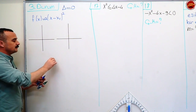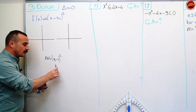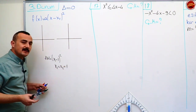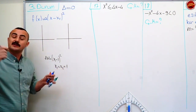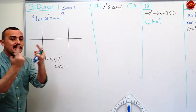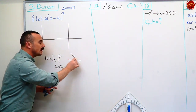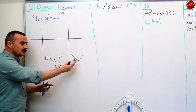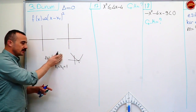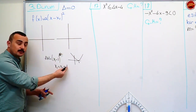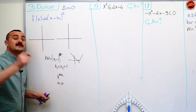Fx fonksiyonu a çarpı x eksi x₁'in karesi — delta'nın sıfıra eşit olduğu durum. İkinci dereceden denklemlerin deltasının sıfıra eşit olduğu durum: tam kare olduğu durum. Mesela x eksi birin karesi: kaç tane kök var? İki tane kök var ama birbirlerine eşitler. Kökler toplamı bir demeyeceksin, iki tane bir var, toplamları iki. Yani bu x eksenine x=1'de dokundu — buraya çift katlı kök diyeceğiz.